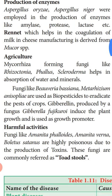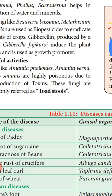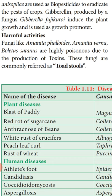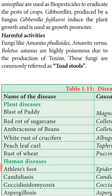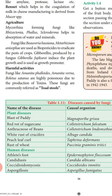Harmful activities: fungi like Amanita phalloides, Amanita verna, and Boletus satanus are highly poisonous due to toxin production, commonly called toadstools. Plant diseases caused by fungi include blast of paddy (Magnaporthe grisea), red rot of sugarcane (Colletotrichum falcatum), anthracnose of beans (Colletotrichum lindemuthianum), white rust of crucifers (Albugo candida), peach leaf curl (Taphrina deformans), and rust of wheat (Puccinia graminis tritici).